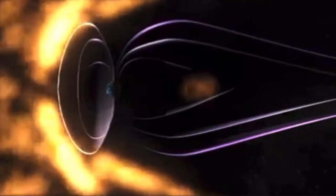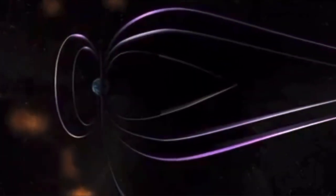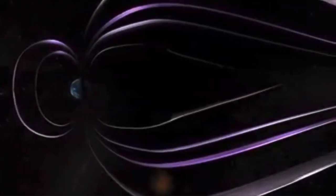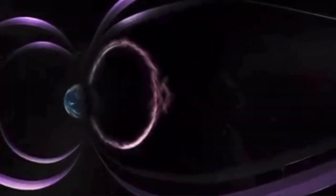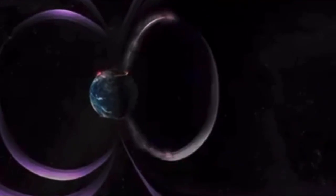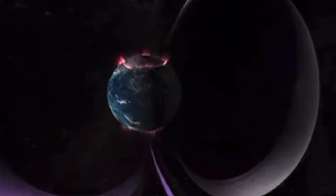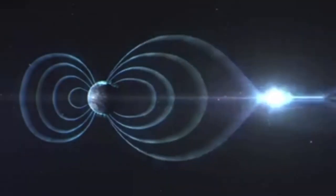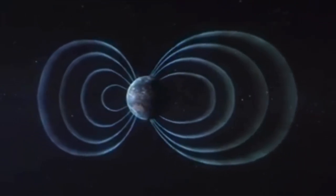All auroras are created when charged particles from the sun are first trapped in Earth's magnetic environment and are then funneled into the atmosphere. But scientists are now realizing that small changes in the magnetic environment can cause big differences in how the aurora can look.